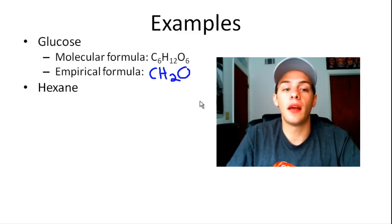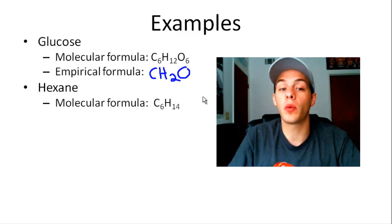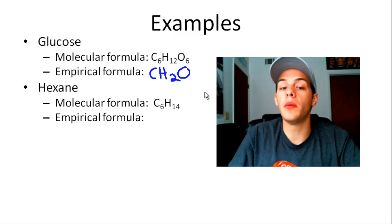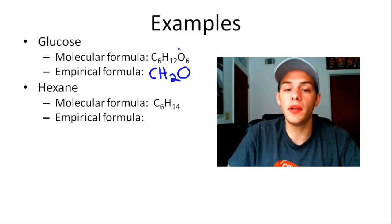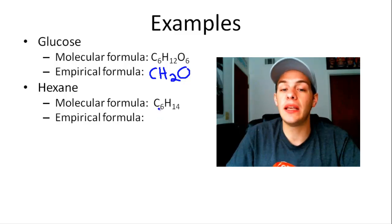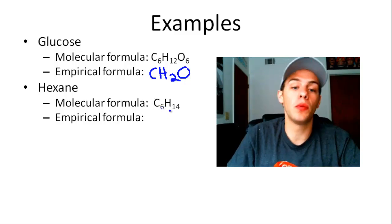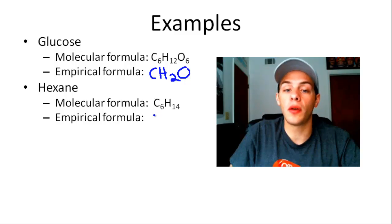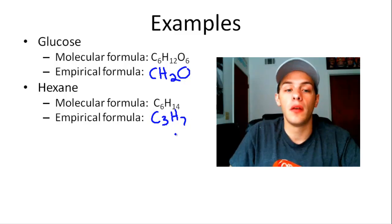This is hexane. The molecular formula for hexane is C6H14 — 6 carbon atoms and 14 hydrogen atoms. To find the empirical formula, the highest number that divides evenly into both 6 and 14 is 2. Dividing 6 by 2 gives 3, and dividing 14 by 2 gives 7. So the empirical formula for hexane is C3H7.